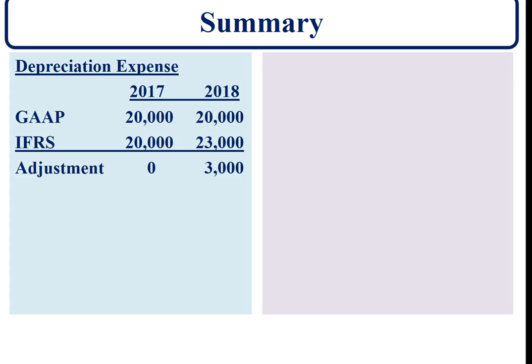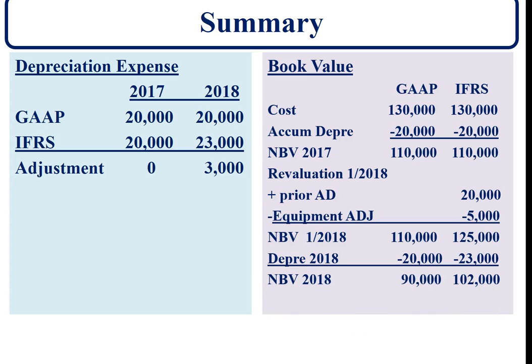Here is a summary. For depreciation expense, there would be no adjustment in 2017, but there would be an additional $3,000 under the international standard in 2018. For the balance sheet accounts, the net value would be exactly the same at the end of 2018. In 2018, we do our revaluation to change the net book value — under the international standard it reflects the fair value — then we book the new depreciation for 2018, and now we have different net book values.